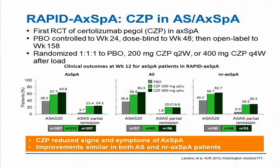What is intriguing is that the response in non-radiographic patients is superimposable on those who met criteria for AS. This study shows that in axial spondyloarthropathy — whether by New York criteria for ankylosing spondylitis or non-radiographic axial SpA — responses were virtually identical. This underscores that using radiographs as the sole diagnostic tool falls short and will prevent us from treating patients without radiographic disease who could benefit from therapy.